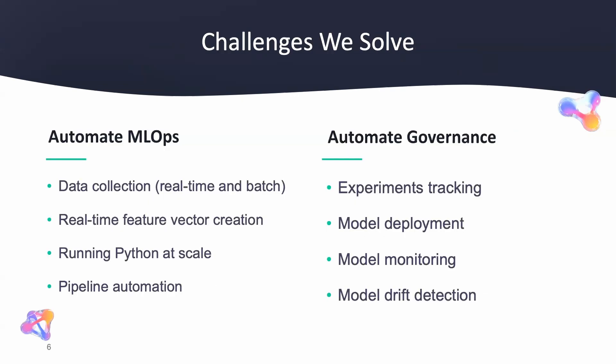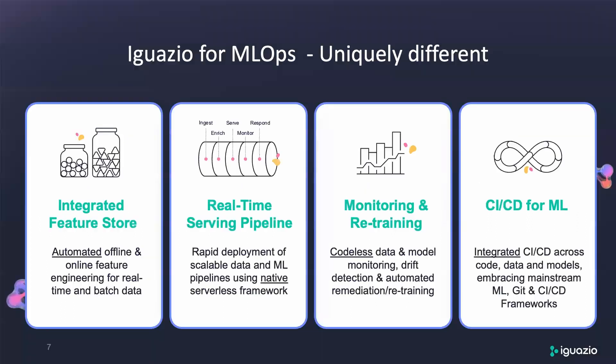Our customers say that we are really good at solving these problems, whether it's automating MLOps processes or automating the governance that goes along with it. Some of the things you may not find anywhere else include our integrated feature store for online and offline ingestion and data transformations, real-time serving pipelines for complex data ingestion and model inferencing flows, monitoring and retraining of models in production, as well as CI/CD integration for tools like GitHub, GitLab, and Jenkins, as well as your existing infrastructure.